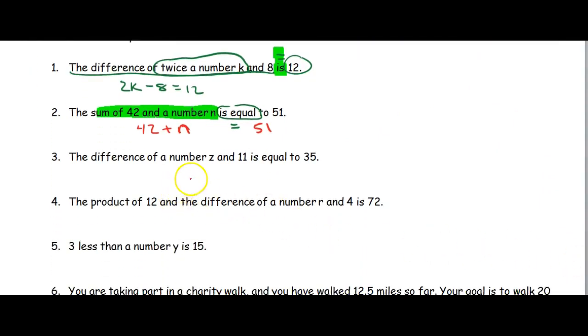Number 3, the difference of a number z and 11 is equal to 35. So we know the equal sign goes here. We know the right side is easy, because it's just going to be 35. Remember, anytime we're dealing with a difference, the order they give us is the way we subtract them. So a number z and 11, so the difference between z and 11 would be z minus 11 is equal to 35.